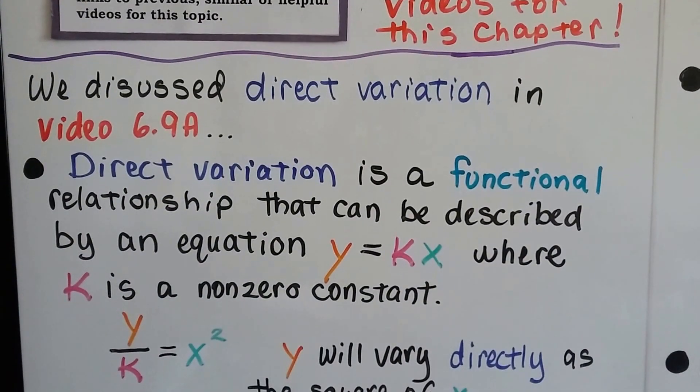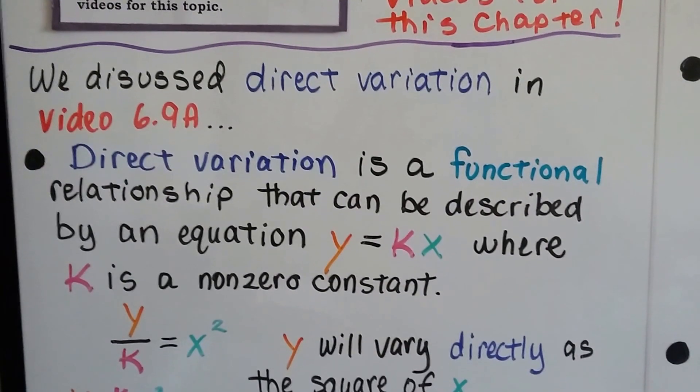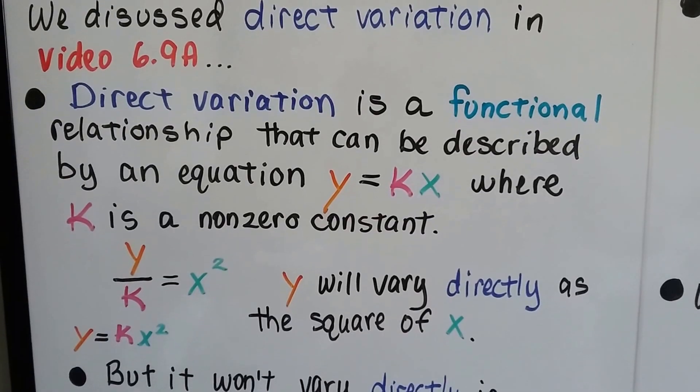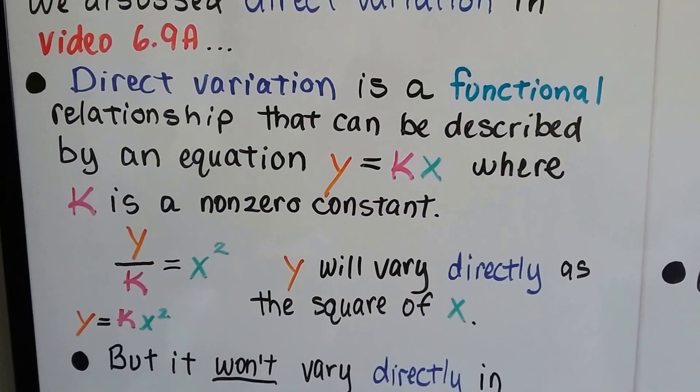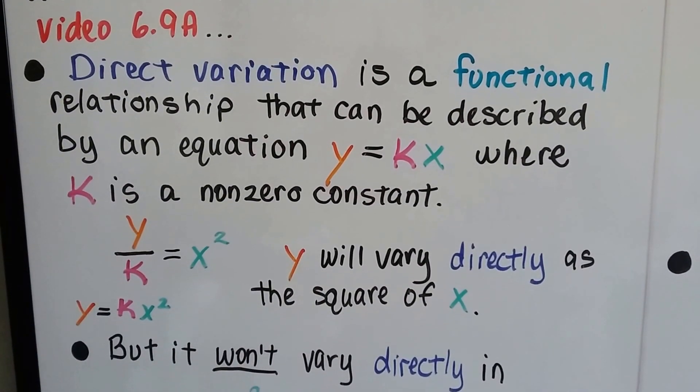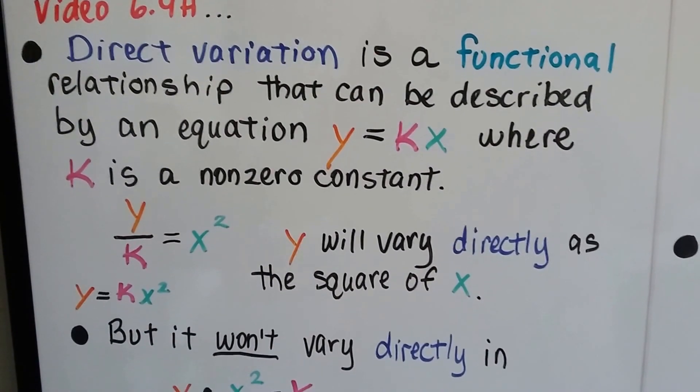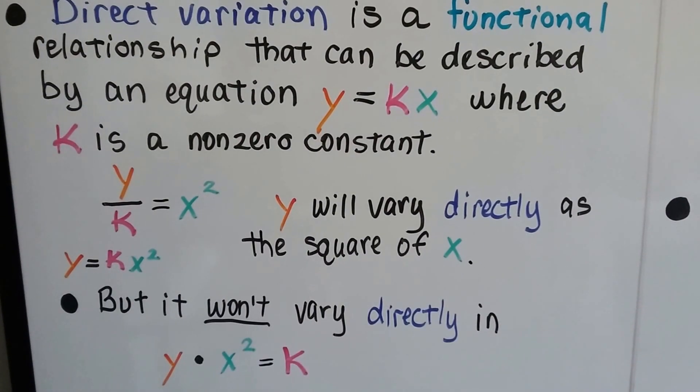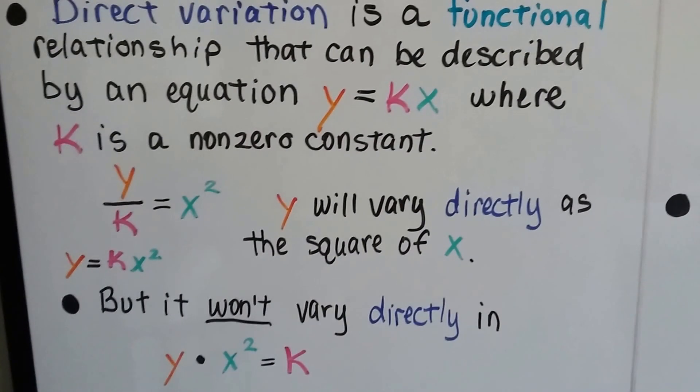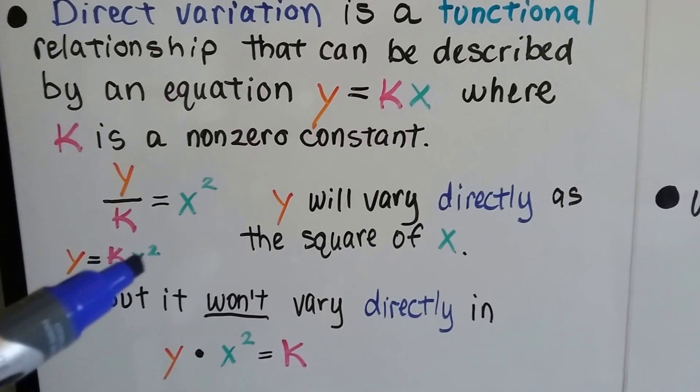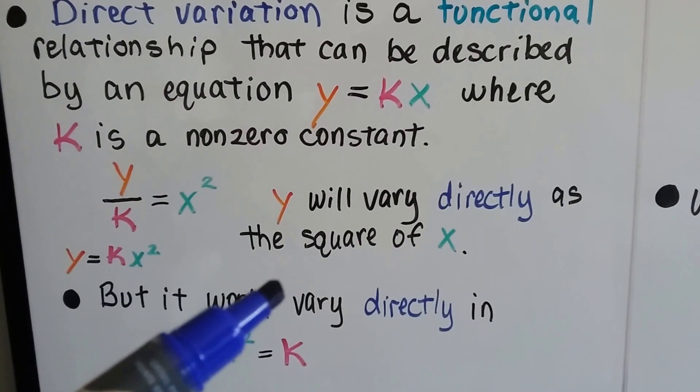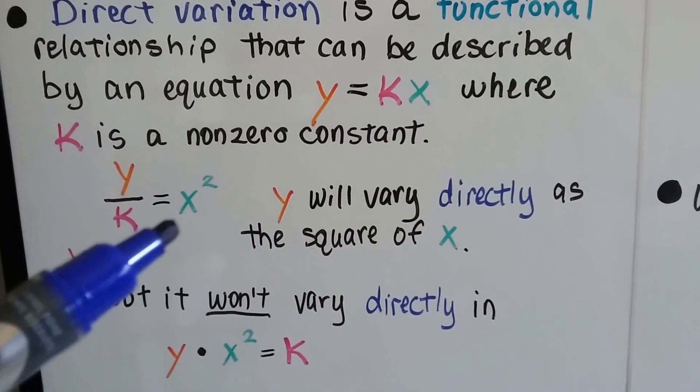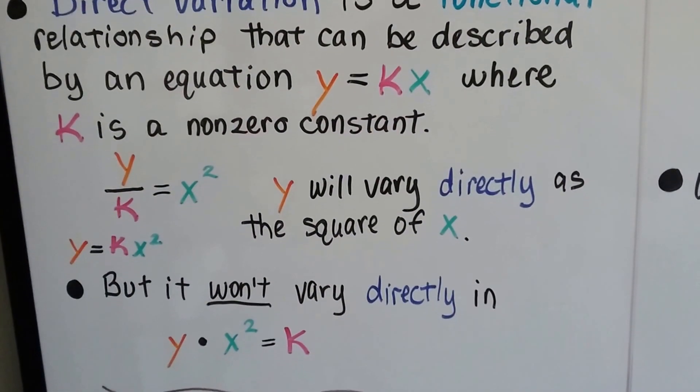We discussed direct variation in video 6.9a back in Chapter 6. Direct variation is a functional relationship that can be described by an equation, y equals kx, where k is a non-zero constant. It won't change. If we have the quotient of y and k, y divided by k equals x squared, or if we have y equals k times x squared, the y will vary directly as the square of x. So the y will change depending on the value of the square of x.